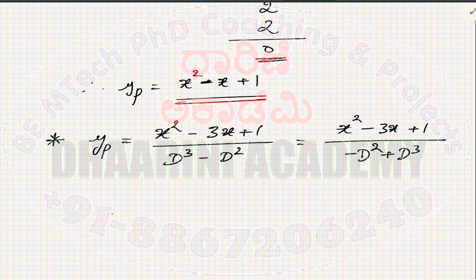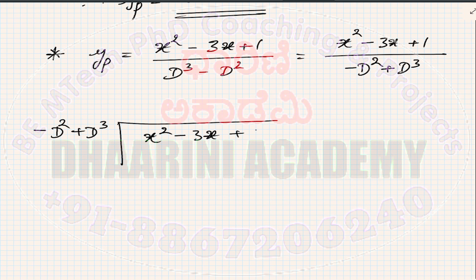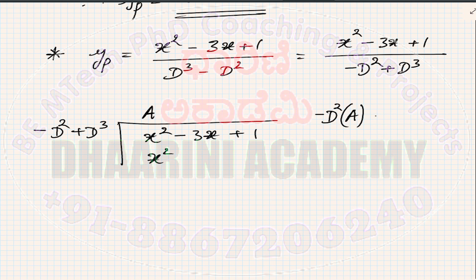In the first step, I convert this into standard format where the denominator is arranged in increasing powers of d. So I write: (x² − 3x + 1) divided by (−d² + d³). Then I write the denominator as −d² + d³ outside, with numerator x² − 3x + 1 inside. The first term in the quotient, call it 'a', must satisfy: −d²(a) = x².